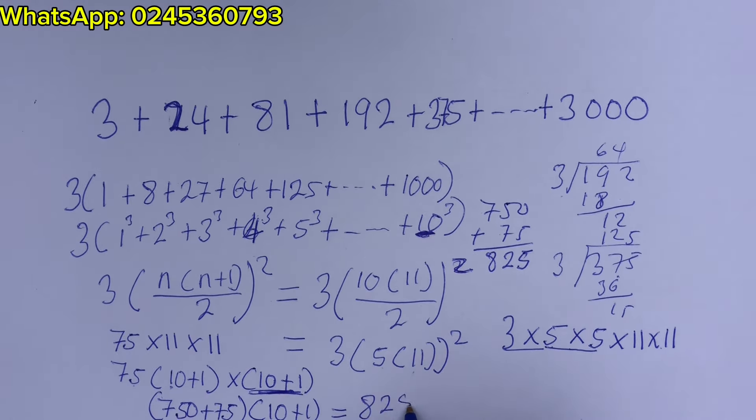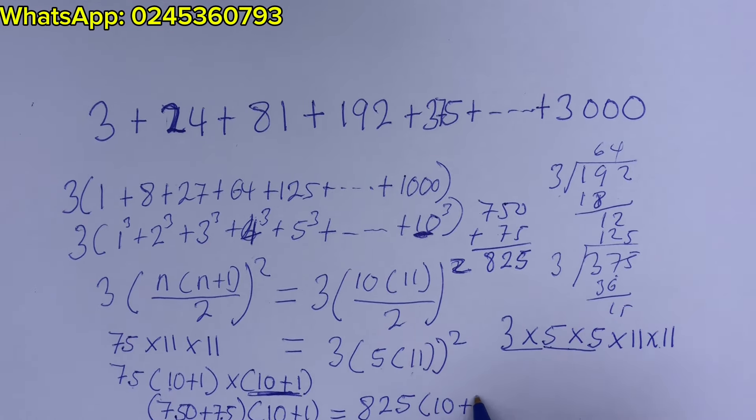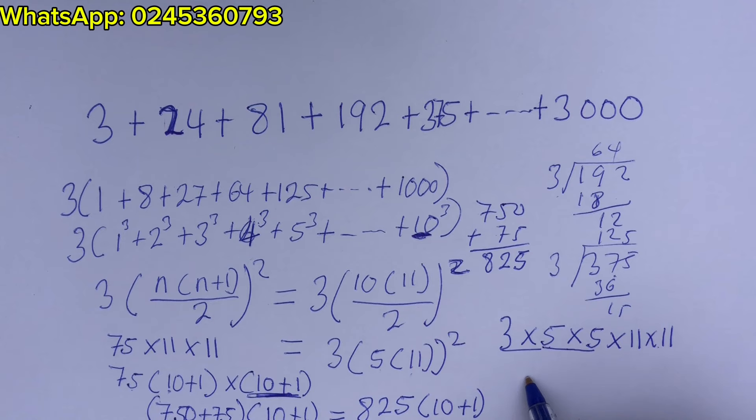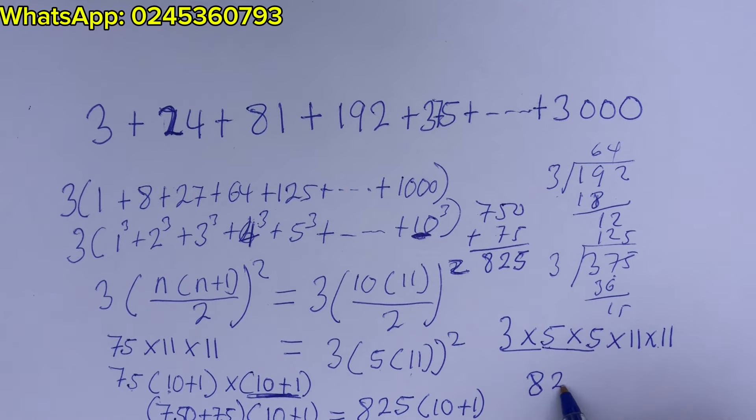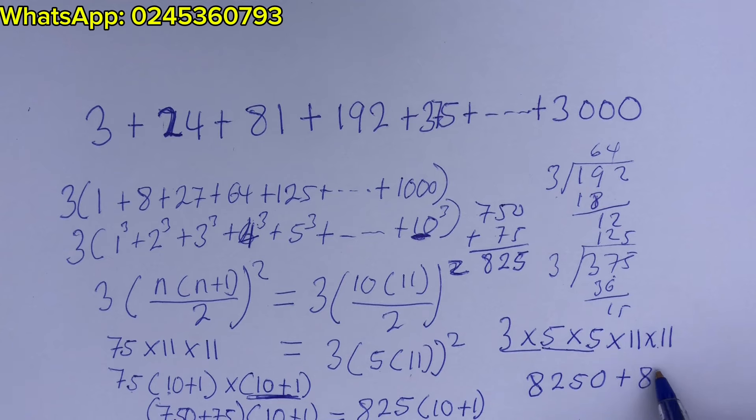So what would this be? 750 plus 75 we have 825. So this is going to give us 825 times 10 plus 1.